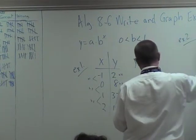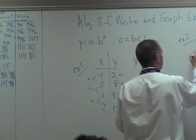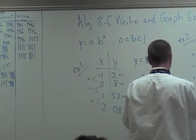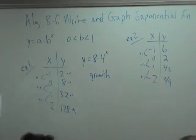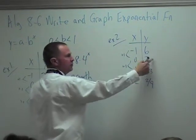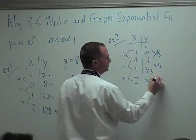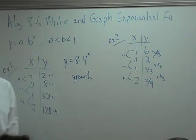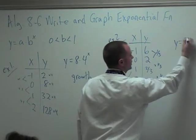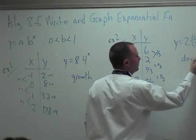Example 2. Negative 1, 0, 1, and 2. Again, those differences are plus 1's. Here's your y: 6, 2, 2 thirds, 2 ninths. What are you multiplying by? About 1 third. Yeah. Make the second number divided by the first, 2 divided by 6, 1 third. Multiplying by 1 third. Somebody tell me what the equation is. Y is equal to 2 times 1 third to the x. This is a decay problem.